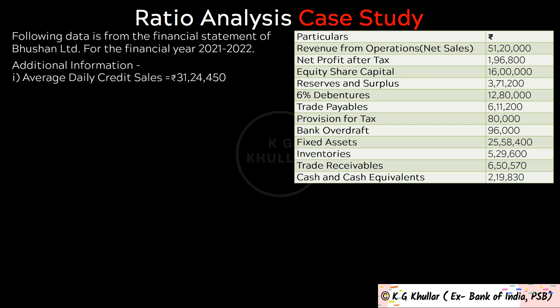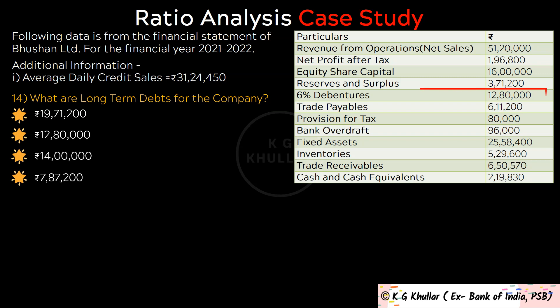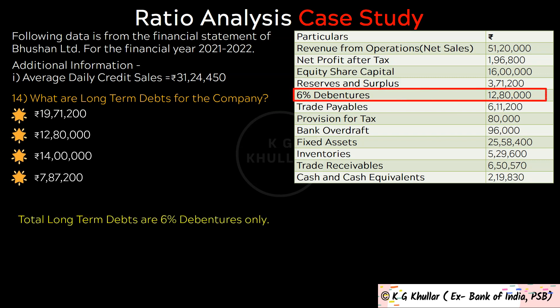The next question is: What are long term debts for the company? In this case study, total long term debts are 6% debentures only, and this amount is Rs. 12,80,000. The correct option is option B.